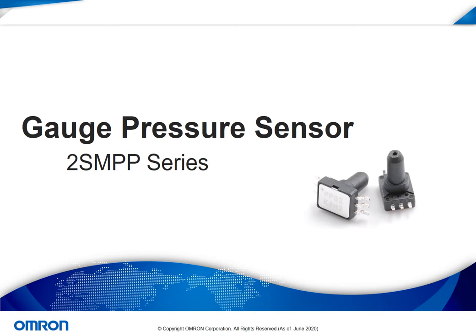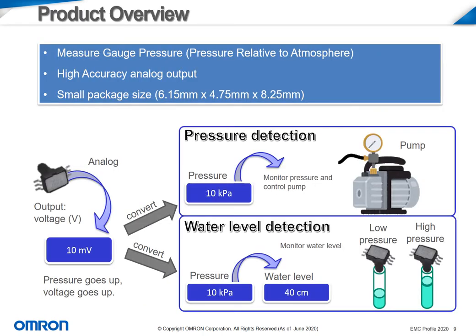The 2SMPP gauge pressure sensor series is OMRON's other product able to accurately detect air pressure. This sensor measures gauge pressure within a closed system relative to the atmosphere. Currently, OMRON is offering these products in an analog version. These sensors are also quite small in size, making them a flexible addition to any new or existing system. Straight air pressure applications can find use in the air pressure sensor as a means to monitor constant pressure readings within a system. Additionally, this sensor can be used to monitor liquid levels within a closed system. OMRON has found use for these sensors in fuel, water, and oil level monitoring applications.